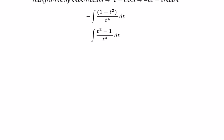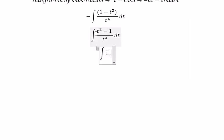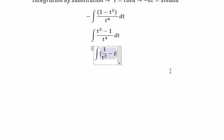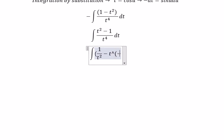We have t² divided by t to the power of 4, which gives 1 over t². And 1 over t to the power of 4 can be written as t to the power of negative 4.